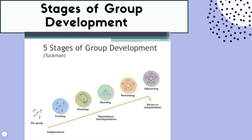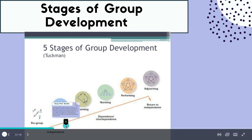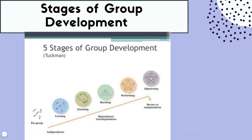The first official stage is forming. The group is starting to come together, understanding the purpose, members are meeting one another and in the beginning stages of working together. There's still probably a lot of independence at this point because the group has not had cohesion yet.